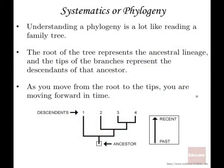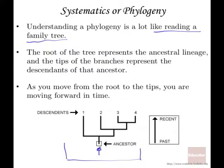Phylogeny is the science of determining the relatedness of organisms and how they differ from one another. Describing these relationships is done a lot like constructing a family tree. You can see the diagram here where the bottom part, or the root of this so-called tree of life, is actually the ancestor, and then everything above the ancestor are the descendants. As we go up the tree, we go from ancestry to descendants, progressing in time from past to most recent.